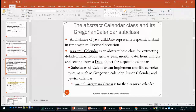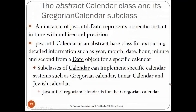Another example of an abstract class in Java is java.util.Calendar. Previously we used java.util.Date, which represents a specific instant in time using milliseconds from the Unix epoch (January 1, 1970). If you try to use methods to get the current day, year, month, or hour from Date, you will see they are all deprecated.